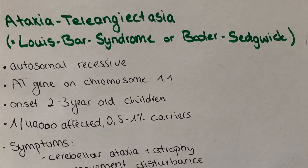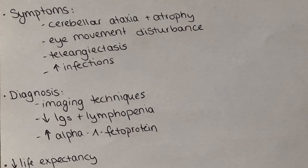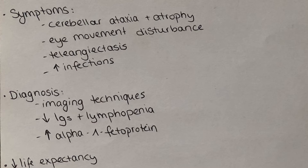Many cell lines are affected by the mutation, which explains the symptomatic variability. The onset of symptoms is usually two to three years of age, and symptoms include cerebellar ataxia — insecurity in standing and walking — cerebellar atrophy especially in the area of the vermis, disturbance of eye movement like nystagmus, and later on physical and mental developmental delay. Telangiectasias also develop, which are dilations of the small arteries especially in the face and the connective tissue of the eye. There is also increased susceptibility to infections because of a T cell defect, and an increased probability of developing leukemia and Hodgkin lymphoma.